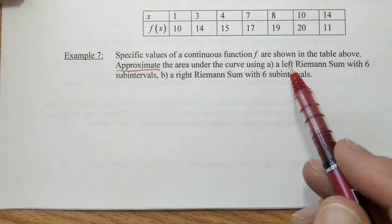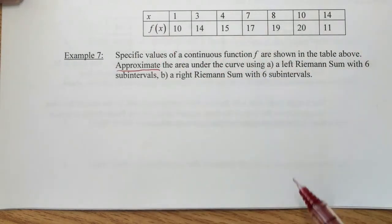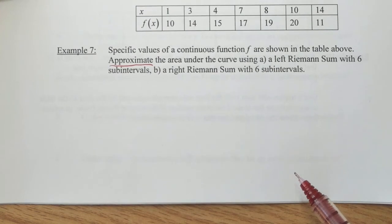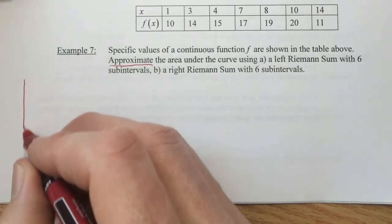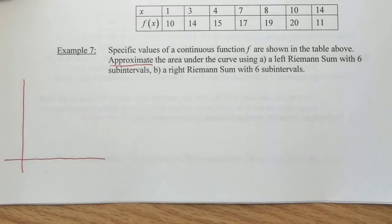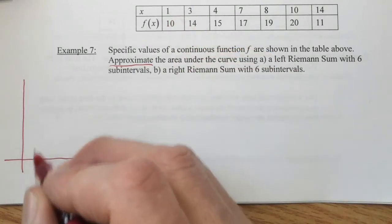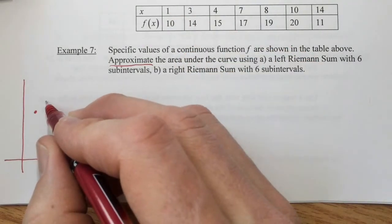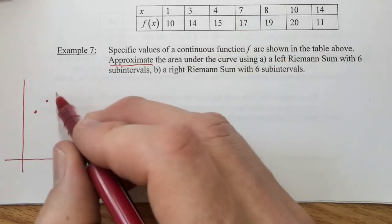I'm going to make a graph of our table of values right here, which is something that you can do but you don't have to do. By doing so, it may allow us to have a better idea of what's going on with our function. So we know over one, up ten, so I'm just going to eyeball things, over one, up ten, then over three, up fourteen, over four, up fifteen.